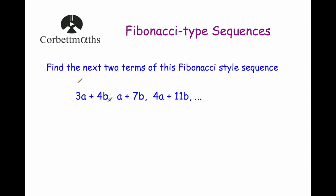So our last example says find the next two terms of this Fibonacci style sequence. And the first three terms are: three a plus four b, a plus seven b, four a plus eleven b. So let's just check and see how that was generated. So three a plus a is four a, and four b plus seven b is eleven b. So let's find our next term. So we would add these two terms together: the a plus seven b and the four a plus eleven b.